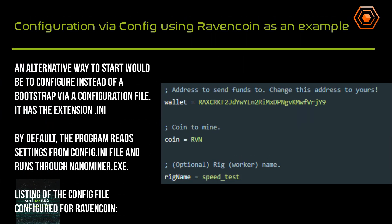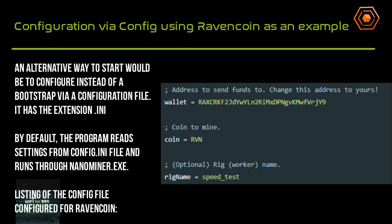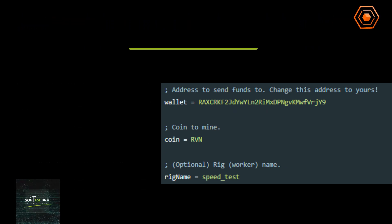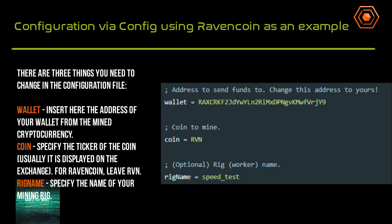An alternative way to start is to configure via a configuration file instead of a BAT file. It has the .ini extension. By default, the program reads settings from the config.ini file and runs through NanoMiner. There are three things you need to change in the configuration file: wallet — insert here the address of your wallet from the mined cryptocurrency.